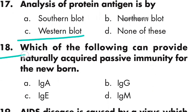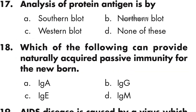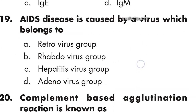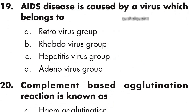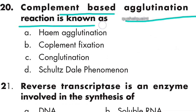Question 18: Which of the following can provide naturally acquired passive immunity for newborns? The answer is IgG, option B is right. Question 19: AIDS disease is caused by a virus which belongs to the retrovirus group, option A. Question 20: Complement-based agglutination reaction is known as hemagglutination, option A is right.